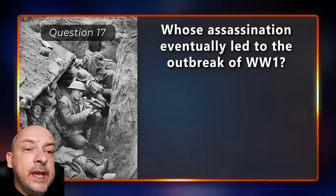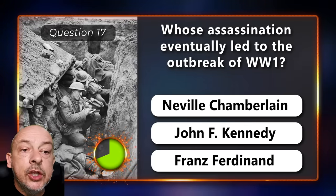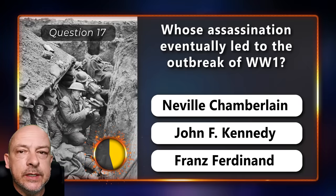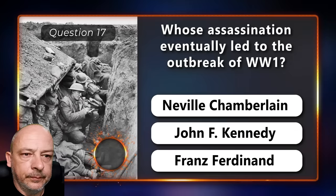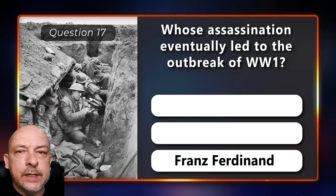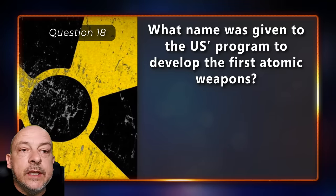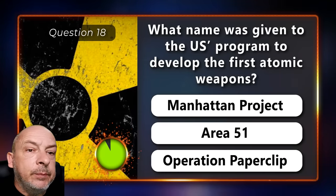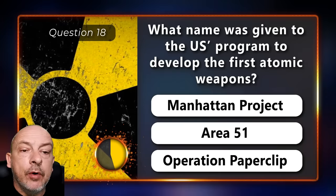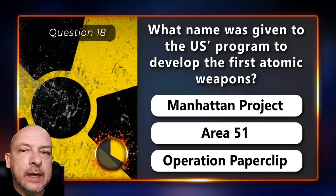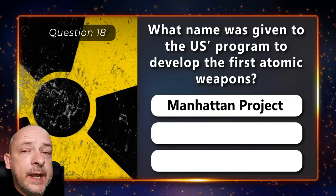Whose assassination eventually led to the outbreak of World War One — Neville Chamberlain, John F. Kennedy, or Franz Ferdinand? The answer is Franz Ferdinand. What name was given to the US program to develop the first atomic weapons — the Manhattan Project, Area 51, or Operation Paperclip? The Manhattan Project.